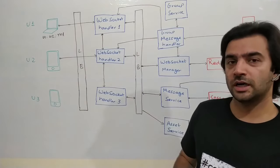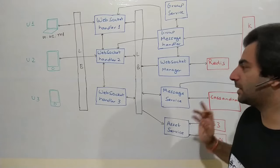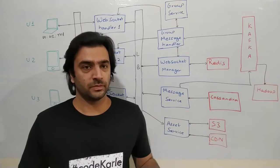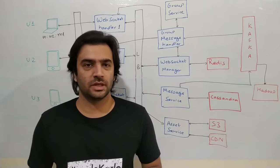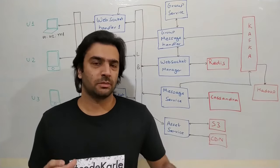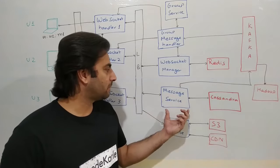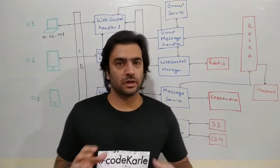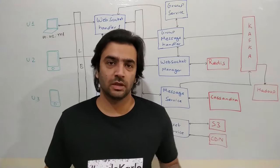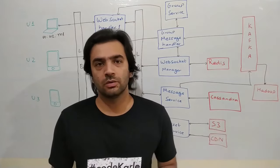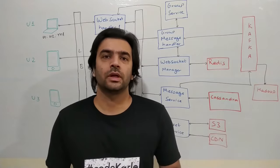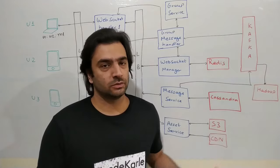WebSocket Handler 1 also talks to something called the Message Service, which is the repository of all messages in the system. It has APIs to get a message by message ID, get messages by user IDs, and various filters — for example, fetching all unread messages for a particular user. It sits on top of a Cassandra database because we have billions of users sending many billions of messages, and Cassandra's query patterns align well with our needs.